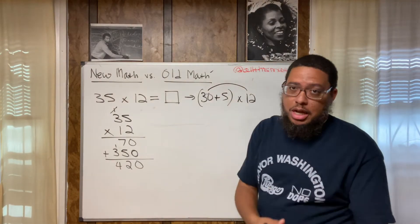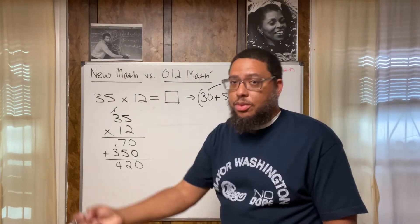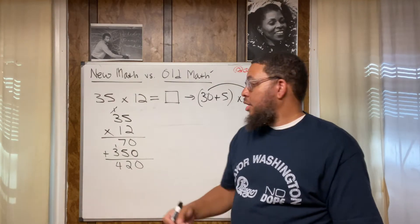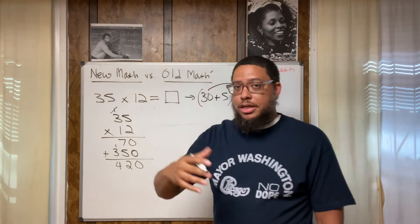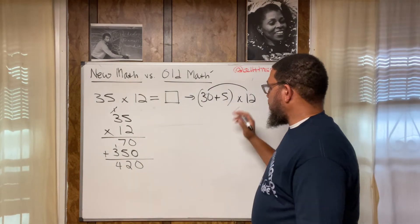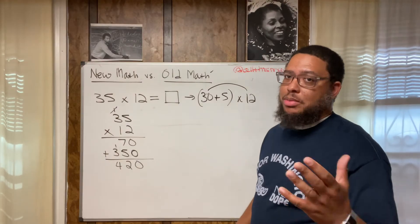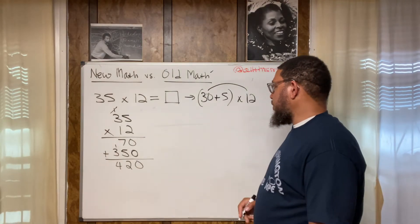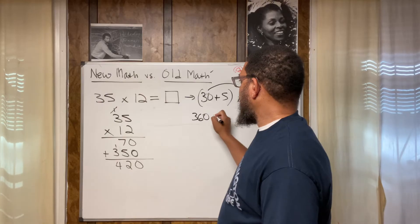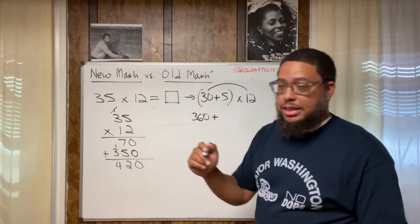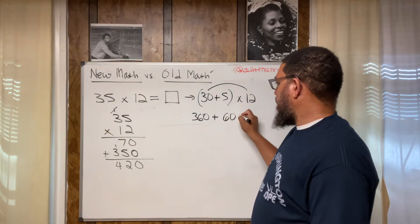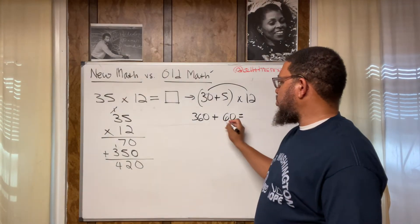That's going to help me do 30 times 12. I need to do 30 times 12 and 30 times 12 is the same thing as doing three times 12 and just attaching a zero at the end of that product. Again, 30 times 12 is the same thing as doing three times 12 and just attaching a zero at the end. So three times 12 is 36. I know that because I know my multiplication facts. Three times 12 is 36. Then attach the zero, you get 360. And then again, I know my multiplication facts. So five times 12 is 60.